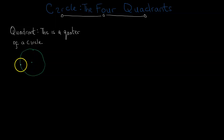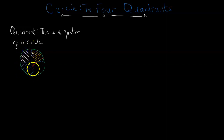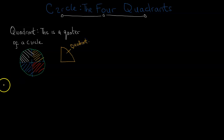Now if I partition the circle into four equal parts like this, each portion would be a quadrant. A shape like this is called a quadrant — it's a quarter of a circle.